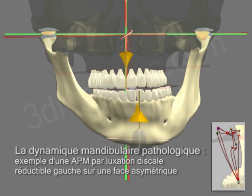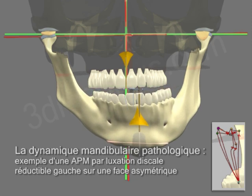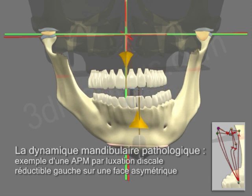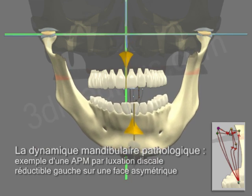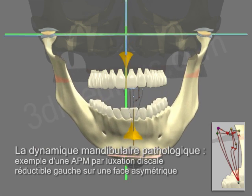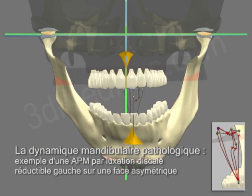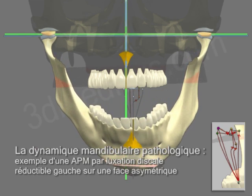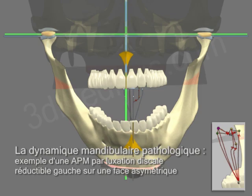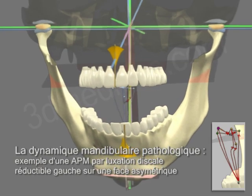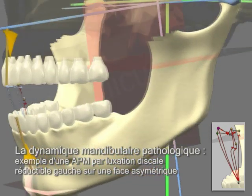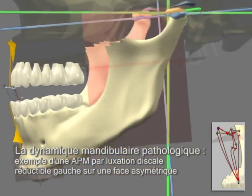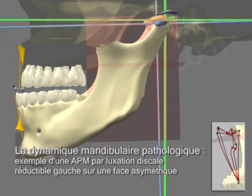Asymmetrical cases and/or those having occlusal dysfunction without disc subluxations, or anatomical anomalies of the temporomandibular joint, or functional and hyper-functional abnormalities, are currently in the making.